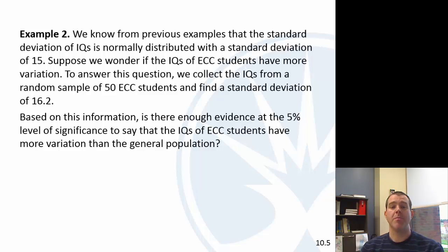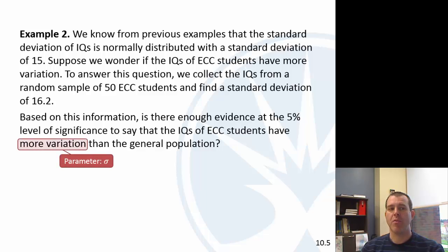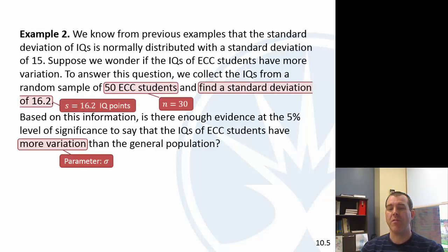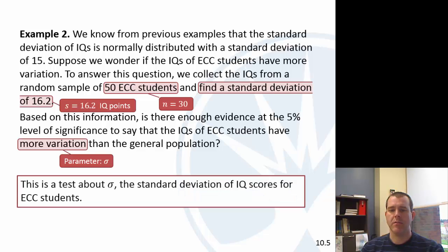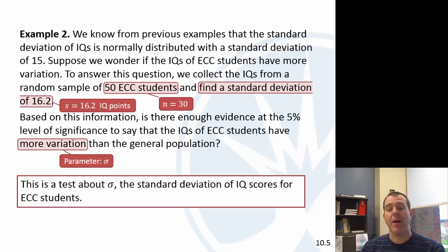Next question is about IQs. We know the standard deviation of IQs is normally distributed with a standard deviation of 15. Suppose we wonder if ECC students' IQs have more variation — 'variation' is a red flag keyword. So the parameter is the variance or standard deviation. We have a sample of 30 students and find a sample standard deviation of 16.2 at the 5% significance level. This is a test about sigma, the standard deviation of IQ scores for ECC students.